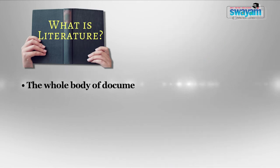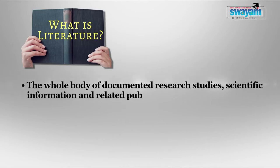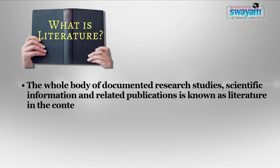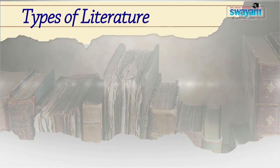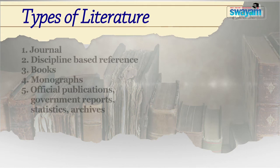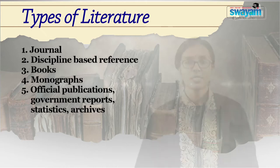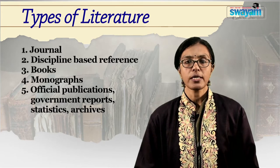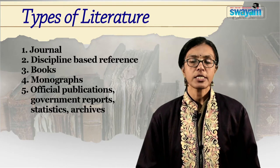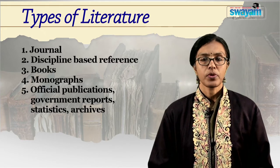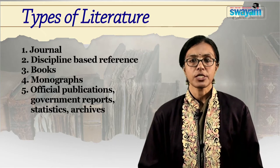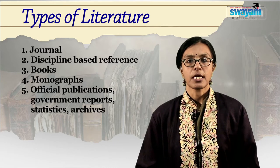The whole body of documented research studies, scientific information and related publications is known as literature in the context of academic research. Let us discuss the types of literature. Depending on the type of research work that we have undertaken, we can search a variety of sources which can be labelled as literature. These can include journal articles — academic research papers published in professional journals — which are considered to be the most important literature in academic research. These publications are mostly peer reviewed, are properly archived and have gone through a rigorous process of academic scrutiny. Due to their increased frequency of publication, the most recent and updated research articles can be accessed here.